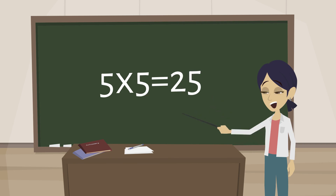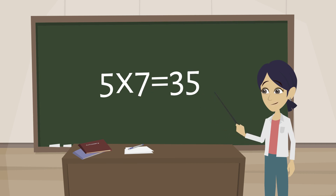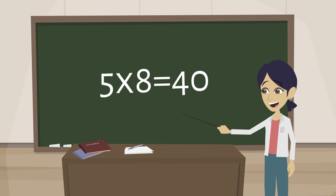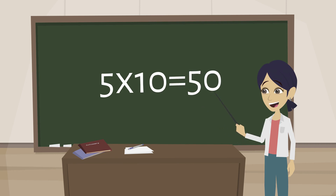5 5s are 25, 5 6s are 30, 5 7s are 35, 5 8s are 40, 5 9s are 45, 5 10s are 50.